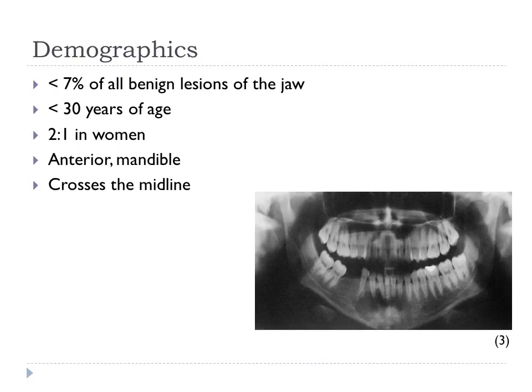Demographically, Central Giant Cell Granuloma is an uncommon lesion, accounting for less than 7% of all benign lesions of the jaw. 60% of cases are diagnosed in individuals under the age of 30, and they are found in a ratio of 2 to 1 in women to men. These lesions appear in the jaw more than anywhere else in the body, but can also be found in small bones of the hands and feet. They are found more commonly in the mandibular jaw over the maxillary jaw, the anterior over the posterior, and will normally cross the midline. If the lesion is found within the first two decades of life, it is most common to find formation anterior to the first mandibular molar and anterior to the maxillary canine.